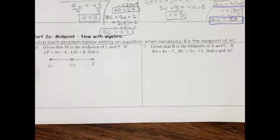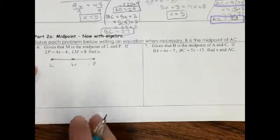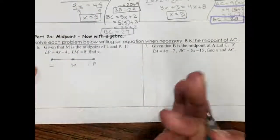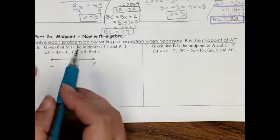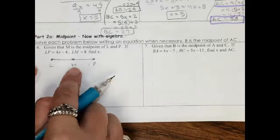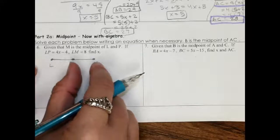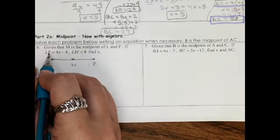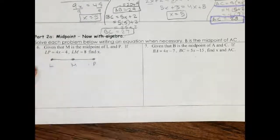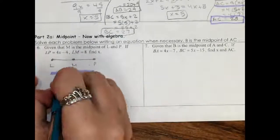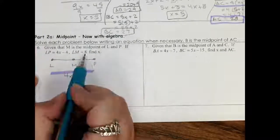This is part 2 of our first day of Unit 3 notes. You should have done the part 1 video first because we're going to still do things the same way. First you draw out the picture. M is the midpoint of LP. What that means is this one is in the middle and this side is equal to that side. I still have to label it just like before. LP, that's the whole distance there. The whole distance is 4x minus 4. And I know LM is 8.